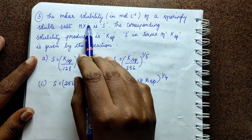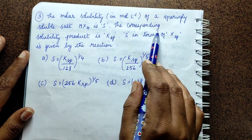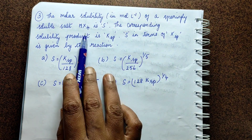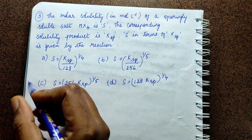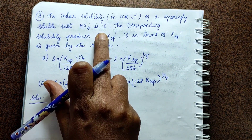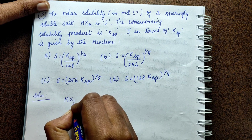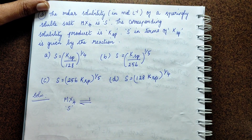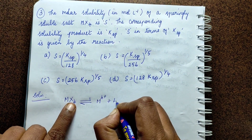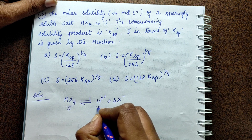Third question: the molar solubility in moles per liter of a sparingly soluble salt MX4 is S. The corresponding solubility product is Ksp. S in terms of Ksp is given by the reaction. So from the dissociation, we get the salt MX4. The molar solubility value is S, so we get M⁴⁺ plus 4X⁻.